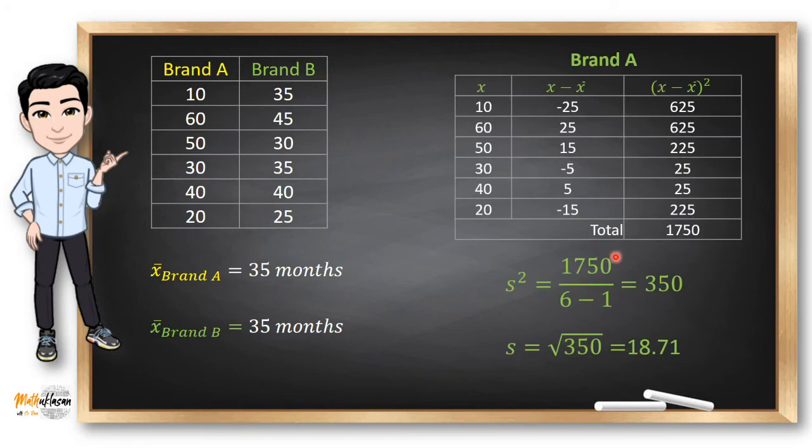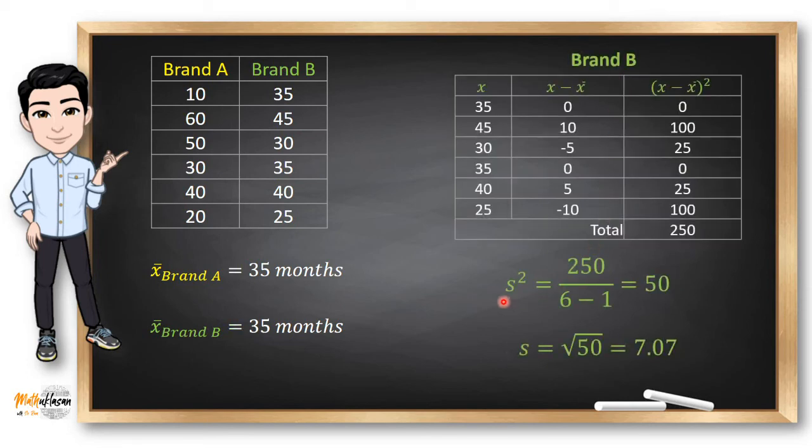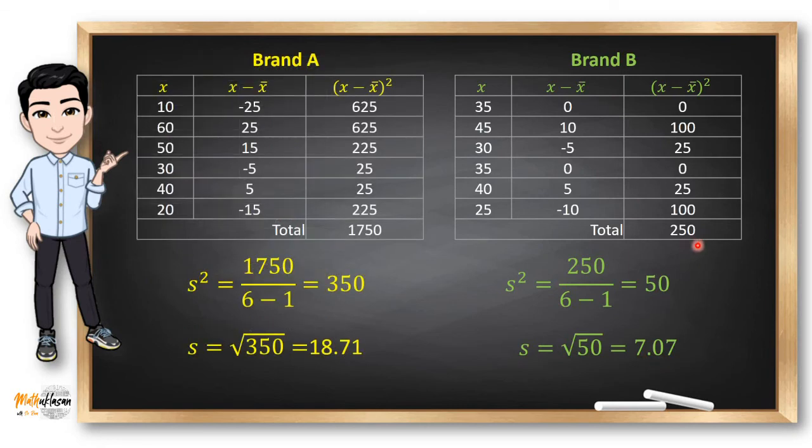Following the procedures in our previous example, we will get a sample variance of 350 and a standard deviation of 18.71 for brand A. For brand B, we will get a sample variance of 50 and a standard deviation of 7.07. Always remember that the smaller the spread or dispersion of the data, the smaller the range, variance, and standard deviation. And since brand B has a smaller variance and standard deviation, brand B performs more consistently. So if you're the customer, we'll choose brand B.